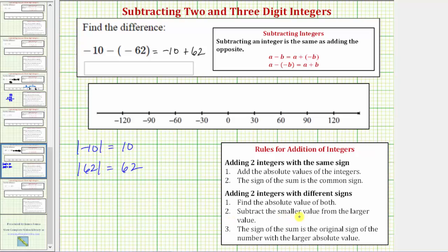Step two: subtract the smaller value from the larger value. So we have 62 minus 10, which equals 52. Step three: the sign of the sum is the original sign of the number with the larger absolute value. Because positive 62 has the larger absolute value, our sum is positive 52. So -10 plus 62 equals +52, and therefore -10 minus -62 equals +52.